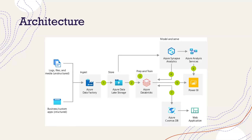Let's talk about the data flow. There are steps one to seven, and I will go through each step. In step one, we bring all our structured, unstructured, and semi-structured data using Azure Data Factory to load data into Azure Blob Storage. If we have a huge amount of data, then we will use Azure Data Lake Storage. Examples of such data include log files, weblog files, text files, flat files, and media files.